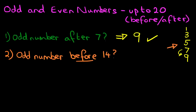We've got the odd number before 14. So what number comes before 14? Let's count backwards because we're doing the numbers before. The number before 14 is 13.